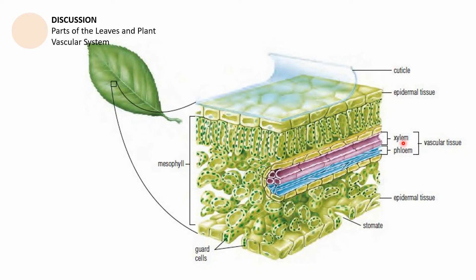The xylem, right here, is responsible for the transport of water and nutrients from the roots towards the various parts of the plant. It's a vascular tissue. The phloem is responsible for the transport of the created sucrose, or sugars and other forms of sugar, from the leaves towards the different parts of the body of a plant.